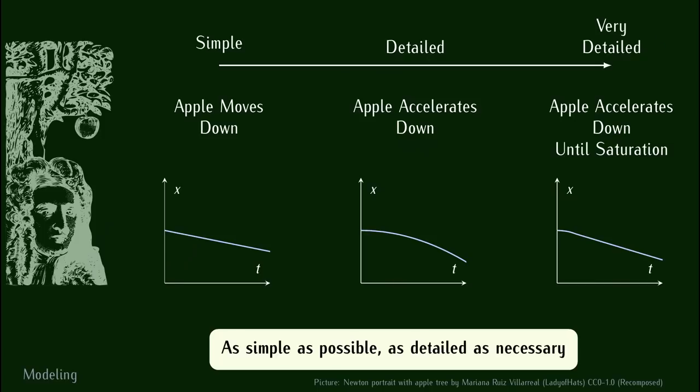Now one step back, modeling, what is it, and what are the basic foundations? Imagine our friend Newton here under his apple tree, and now we cut the apple loose, and we ask ourselves, what's going to happen? We can look at that at different levels of detail, from a very simple level to a very detailed level. At the simple level, you could say the apple moves down. So you see on the plot, the line just goes down, constant velocity. This is an observation that you can make very easily just by looking at it. You don't need to measure anything.